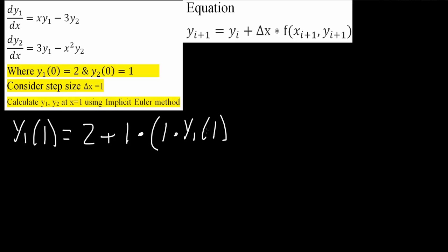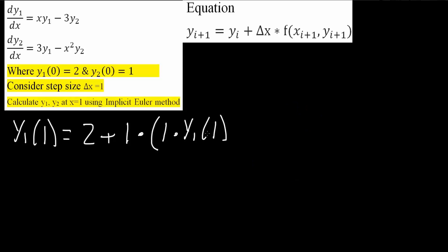And so we put 1 times y1 parenthesis 1. We don't know the value for y1 when x is 0. So I'm going to put y1 like this minus 3 parenthesis y2 parenthesis 1. Again, this right here. Because it says i plus 1. We know the value when it's just i, but we don't know the value when it's plus 1. Meaning, we don't know the value when we have a 1 right here or a 1 right here. That is something that we're trying to find. And so that's how we're going to leave it as.